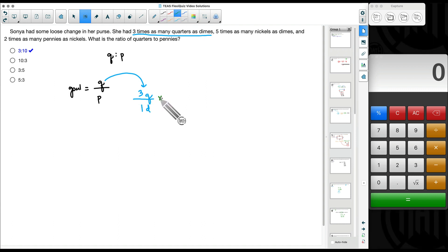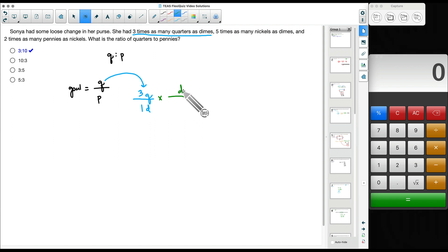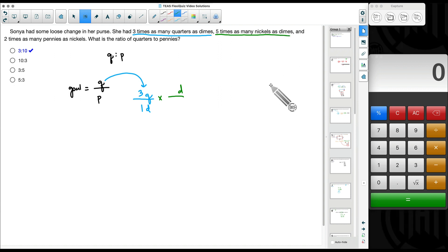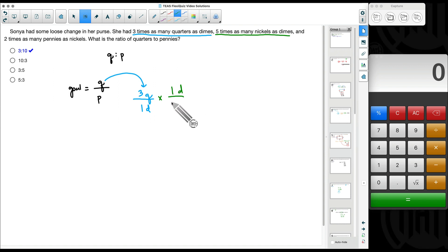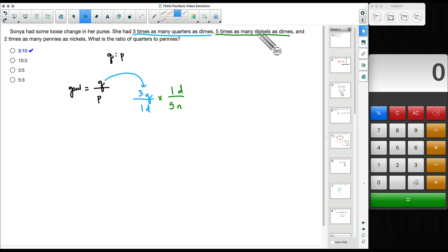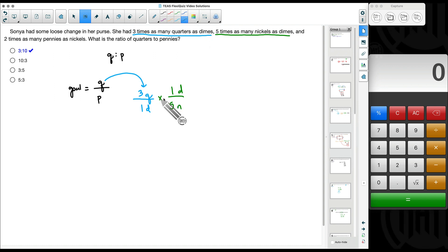Now let's take this. Let's get rid of dimes because we do not want dimes in our answer. So what's something that we know about dimes? Five times as many nickels as dimes. So what does this mean? For every one dime she has, she will have five nickels. So for every one dime, she has five nickels. We can get rid of the dimes.